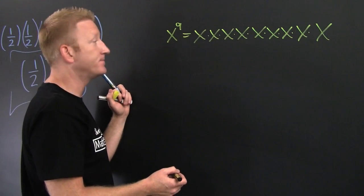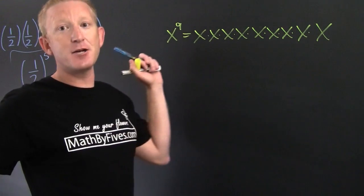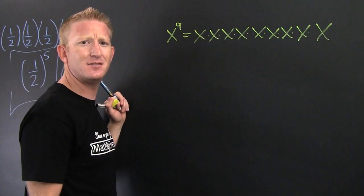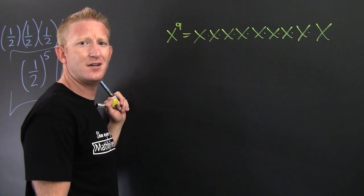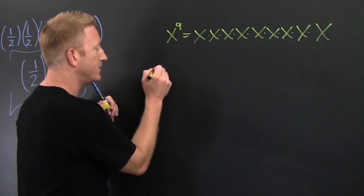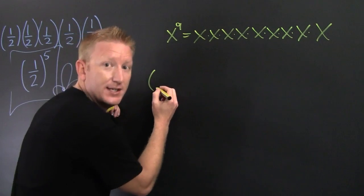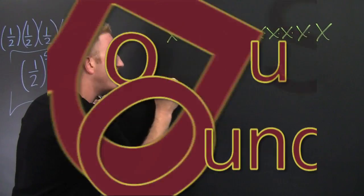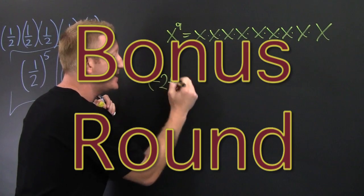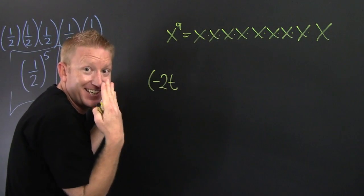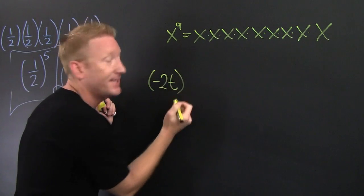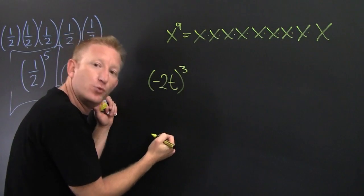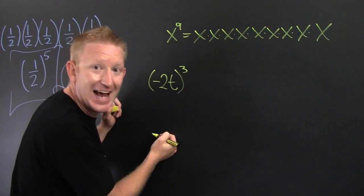I've got a few more than that. How about this one? Bonus round. What if you had minus two t, t, t, t — and then we raise that to the three. And we want to expand that out.